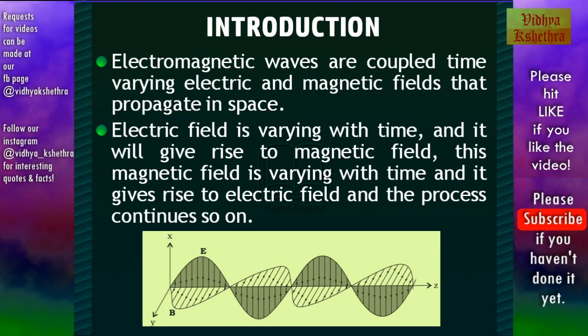This is a figure showing an electromagnetic field. In this case the electric field and the magnetic field are perpendicular to each other and also to the direction of propagation. The direction of propagation is along the z-axis, while the electric field is in the xz-plane and the magnetic field is along the yz-plane.